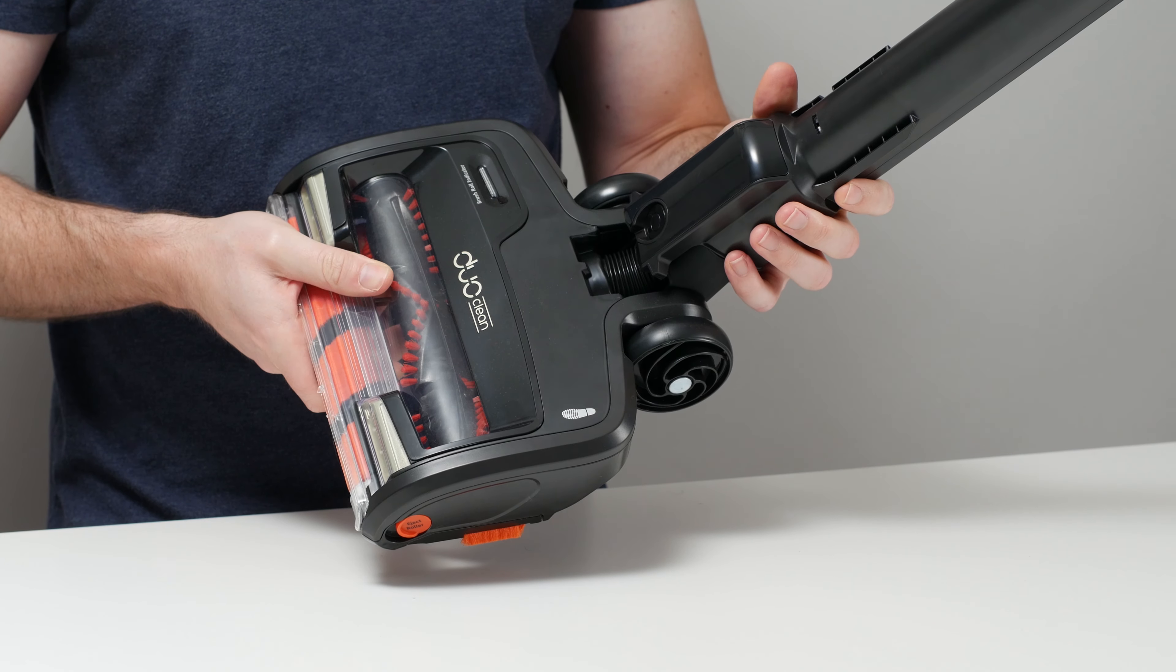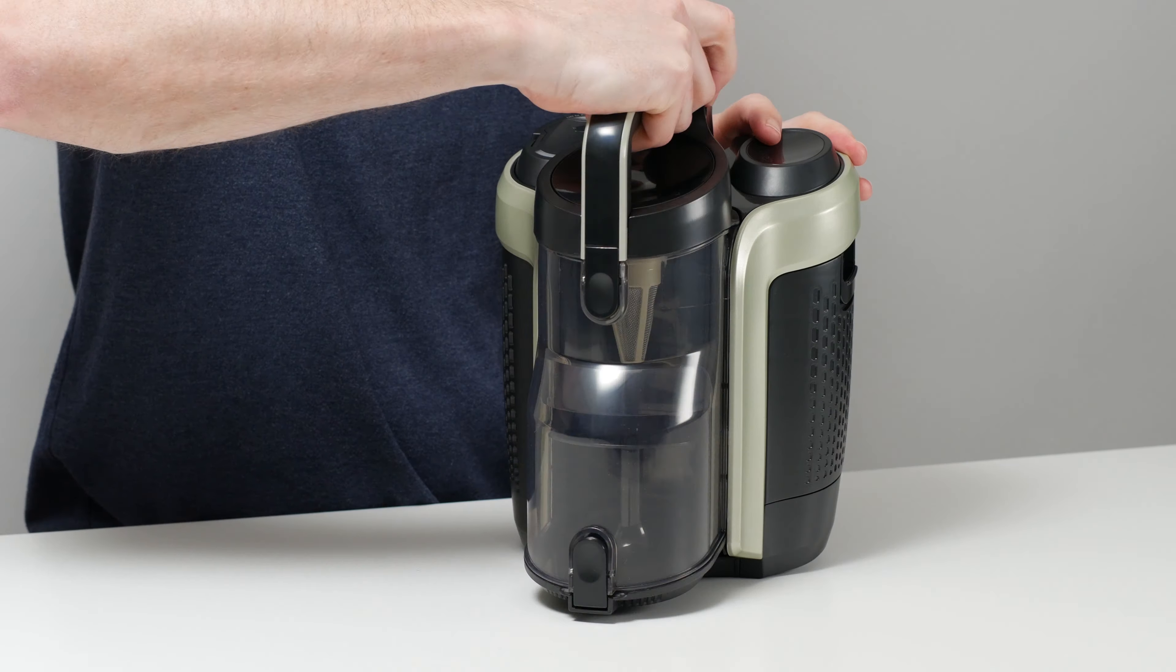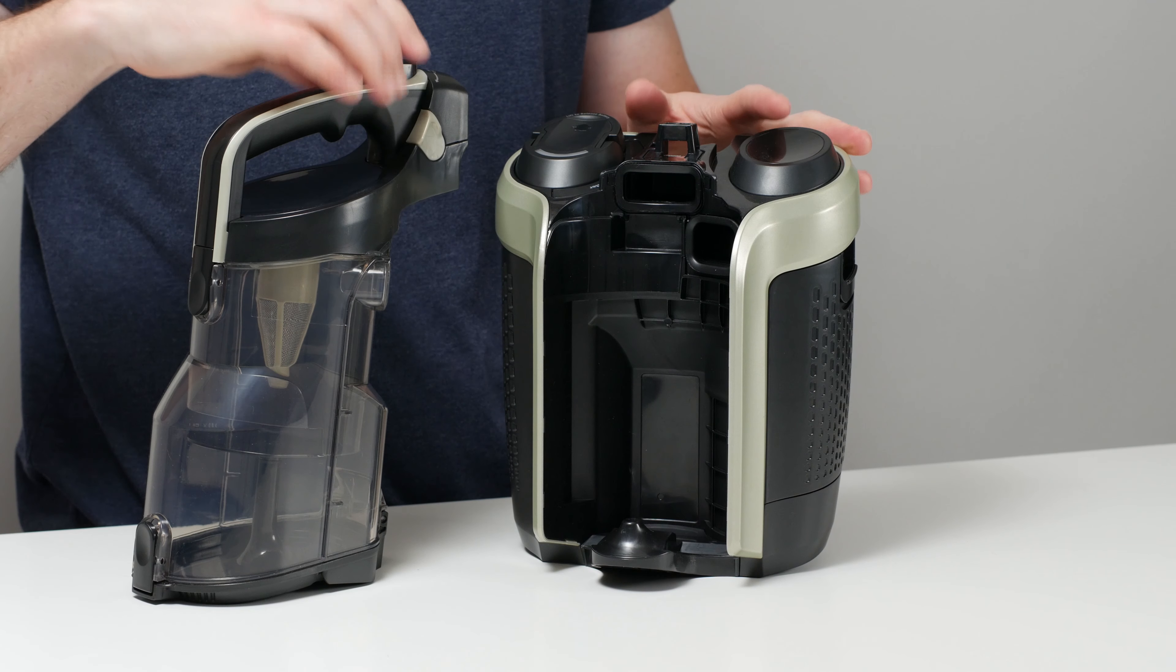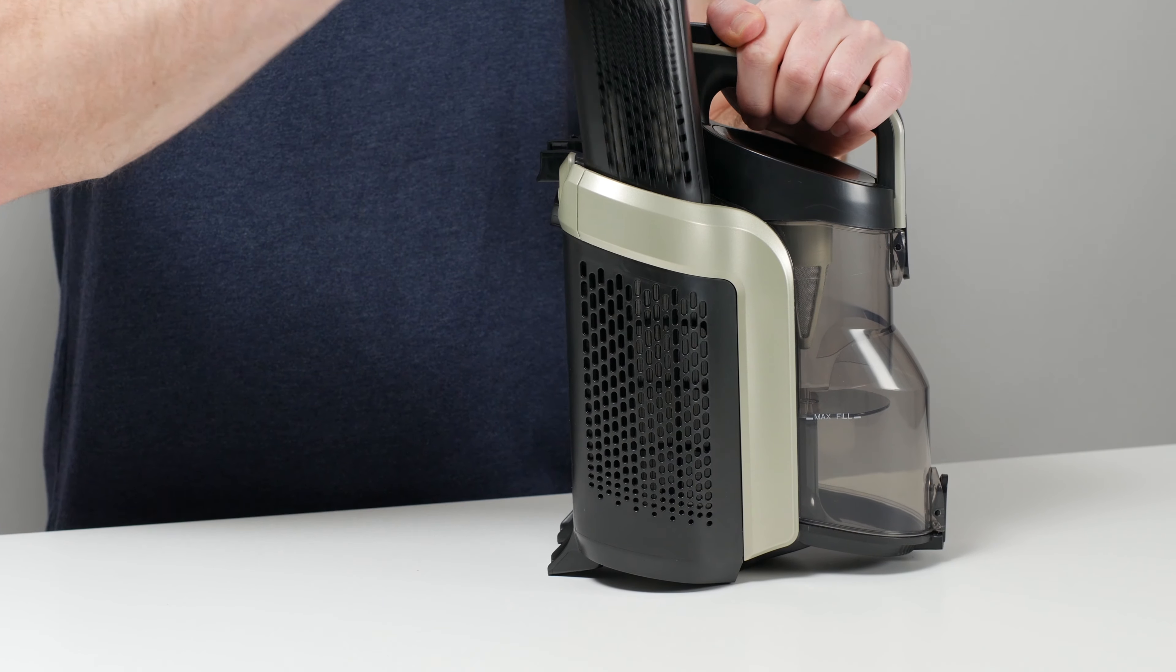And when not in lift-away mode, a lift-away main body that contains a dustbin, the motor for the vacuum, two filters, and a very heavy battery pack.